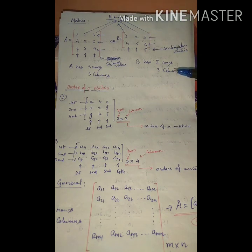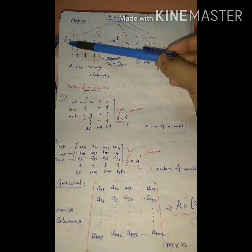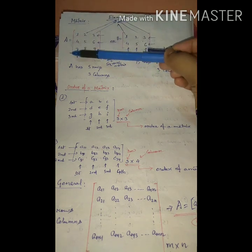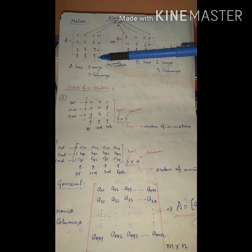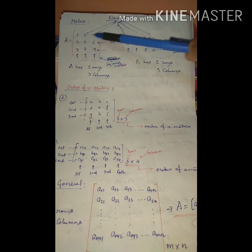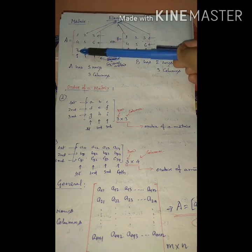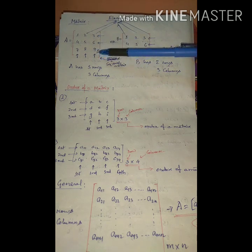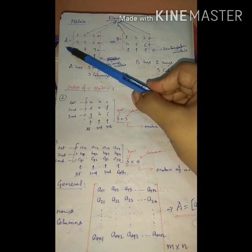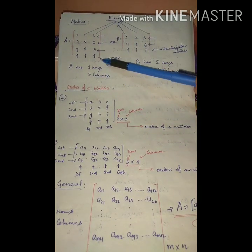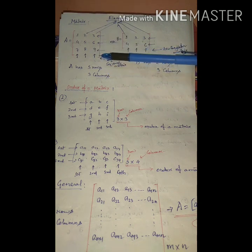Now let's formally define a matrix. We consider matrix A written in big brackets: 1, 2, 3, 4, 5, 6, 7, 8, 9. The first row is 1, 2, 3; the second row is 4, 5, 6; the third row is 7, 8, 9. There are three horizontal lines and three vertical lines. Matrix A has 3 rows and 3 columns. If the number of rows and the number of columns are the same, this is known as a square matrix.